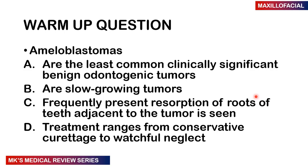Like I start all my videos, we want to begin with a warm-up question. Concerning ameloblastomas: A — are the least common clinically significant benign odontogenic tumors, true or false? B — are slow-growing tumors. C — frequently present resorption of roots of teeth adjacent to the tumor. D — treatment ranges from conservative curettage to watchful neglect. Note down your answers; I'll give them at the end of the lecture.